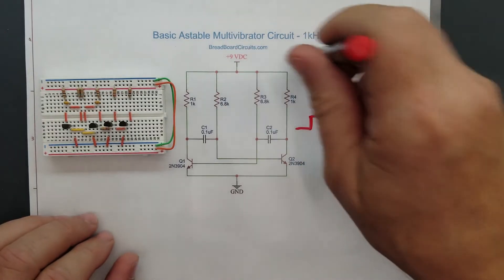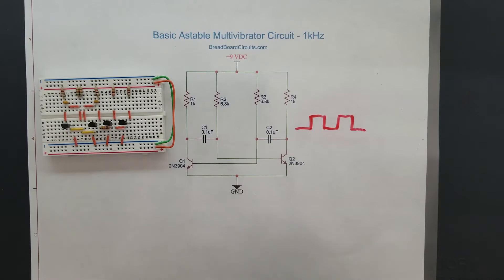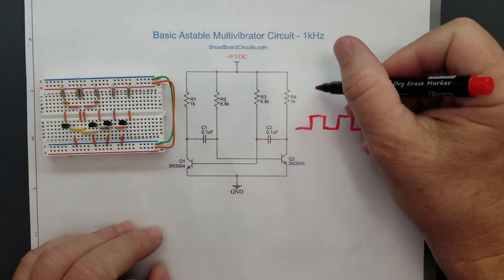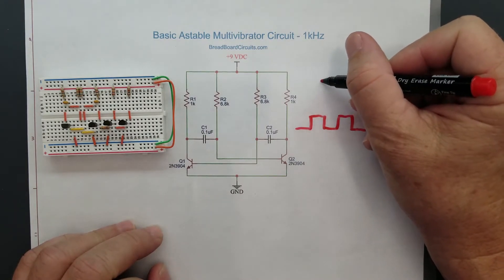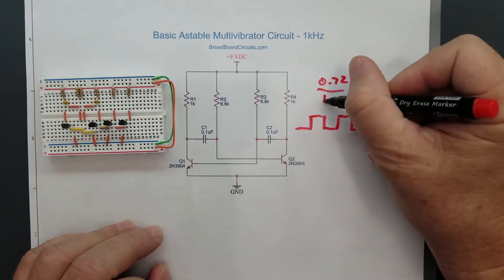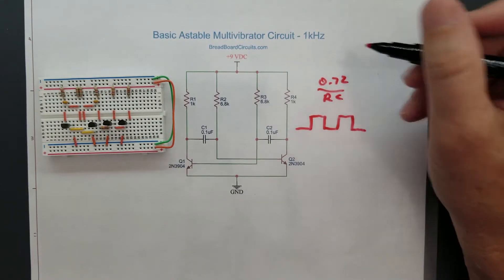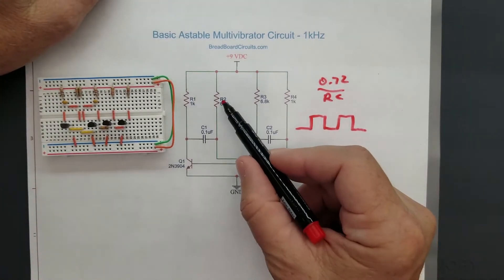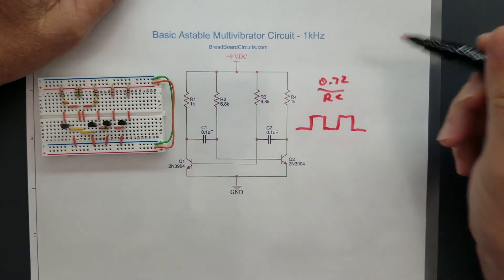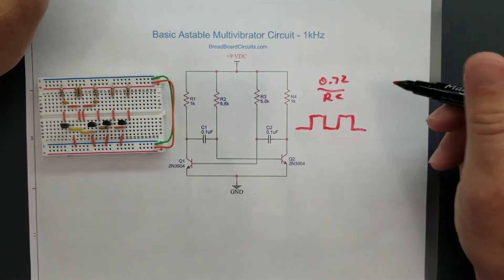What we're going to do, this is your basic astable multivibrator, and what we've done is we've selected component values that will yield a frequency of around 1 kHz. And as described on a previous video, the frequency of this circuit is determined by 0.72 divided by RC, assuming that this is a symmetrical circuit that has a 50% duty cycle. This would be your R and this would be your C. So this comes out to approximately 1 kHz.